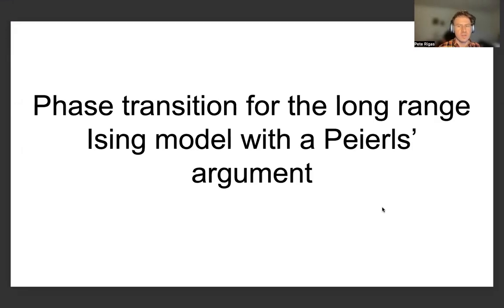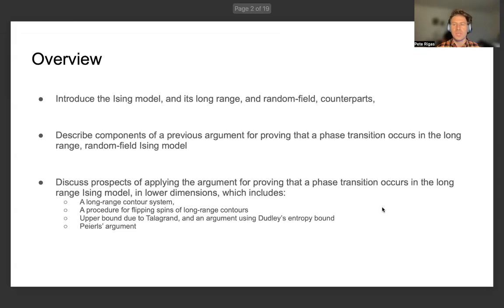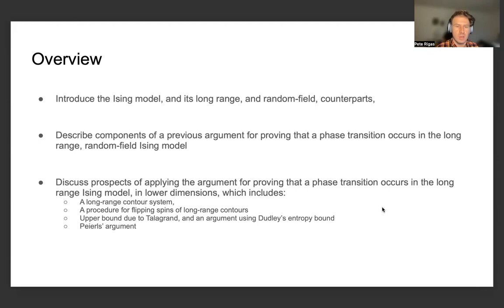The title of this presentation is Phase Transition for the Long-Range Ising Model in Lower Dimensions with the Peierls Argument. We'll be introducing the long-range Ising model and its parts, and describing components of a previous argument for proving that a phase transition occurs in the long-range random field Ising model and how a similar method can be used to demonstrate that a phase transition occurs in lower dimensions.